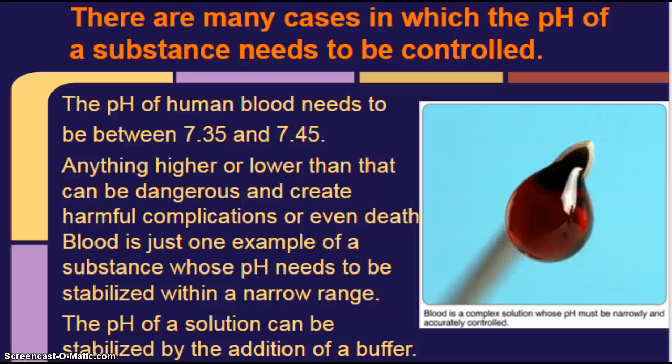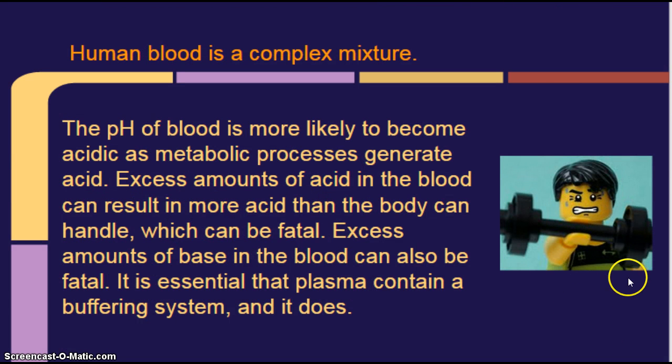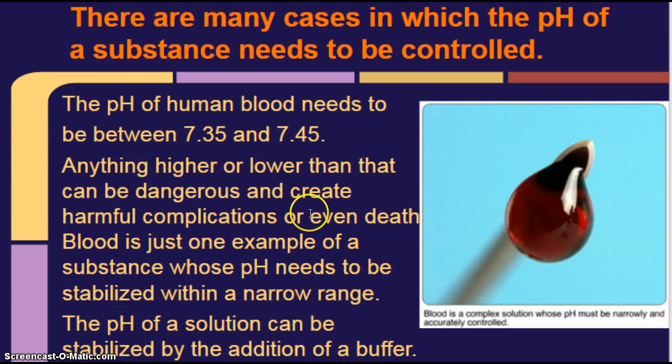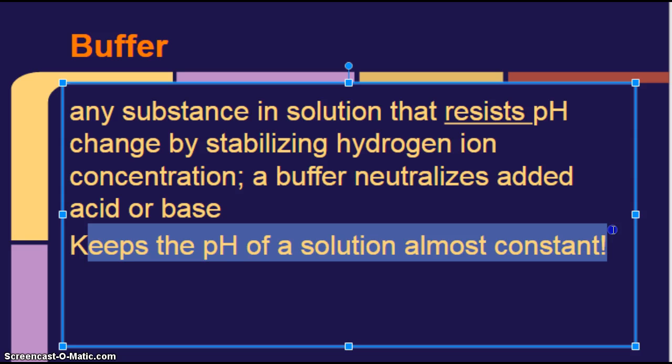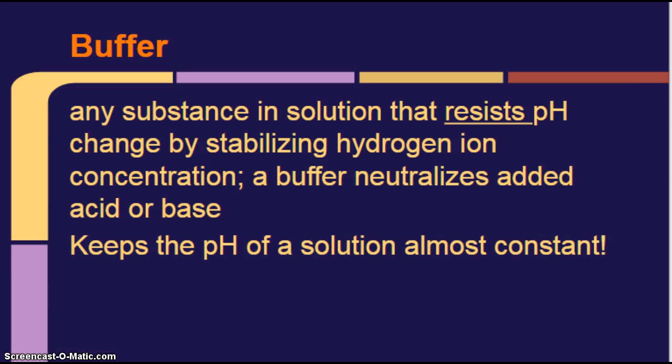And like we talked about here, every time you walk around, your body is creating new substances such as acids. And that's getting into the blood. And your body needs to be able to control it and keep the pH of your blood between these two levels. And there's not a lot of margin for error here. I mean 7.35, 7.45, that's a pretty small window. So the pH of a solution can be stabilized by the addition of a buffer. So again, we have that buffer to keep the pH of the solution almost constant.